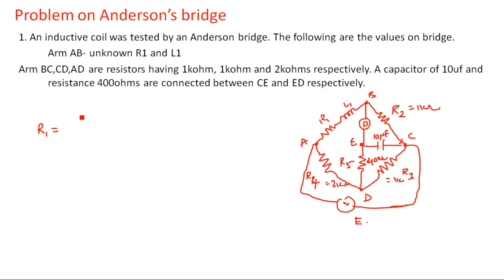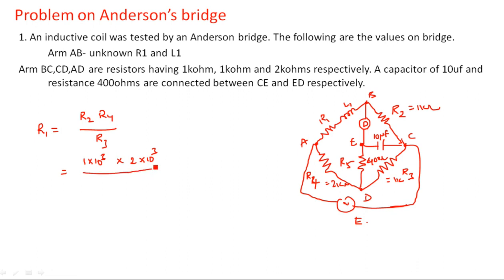The formula for R1 is: R1 = R2 × R4 / R3. Substituting the values: R1 = (1 kΩ × 2 kΩ) / 1 kΩ. The 1 kΩ terms cancel, giving R1 = 2 kΩ. That is the value of R1.